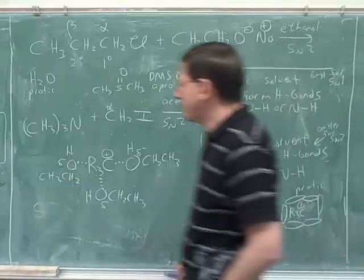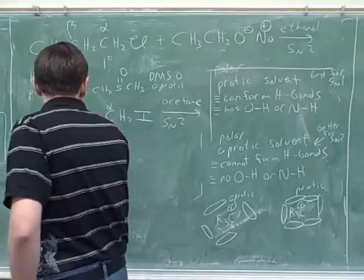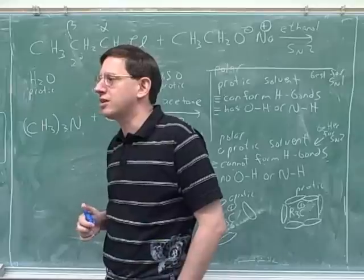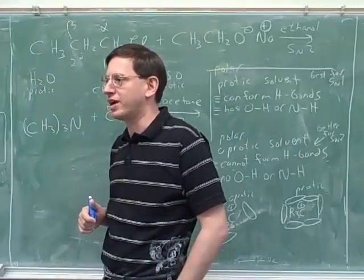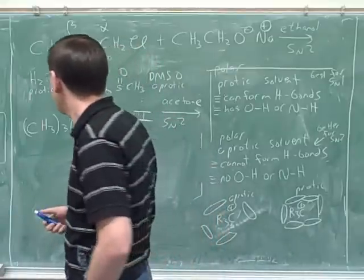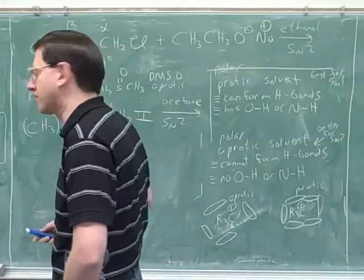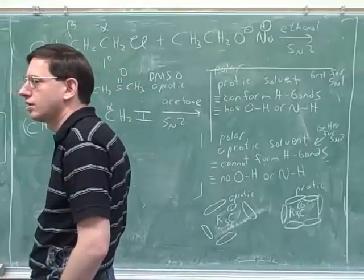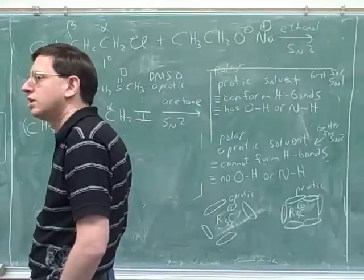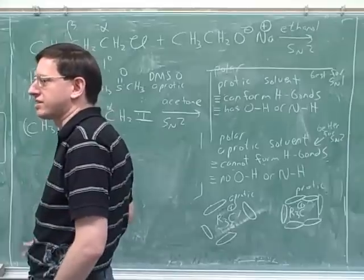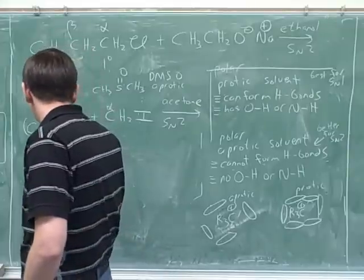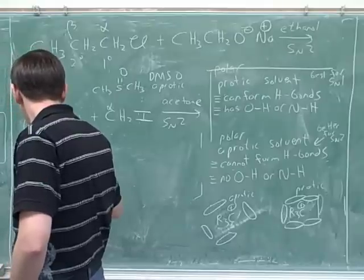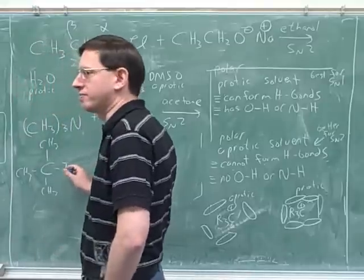To summarize, the big obstacle to SN2 was steric hindrance that blocks the nucleophile. In this session and the last one, we've seen three possible sources of steric hindrance that can block the nucleophile. One possible source is being a tertiary carbon — so if the substrate has a lot of substitution, there can be steric hindrance from the substrate.